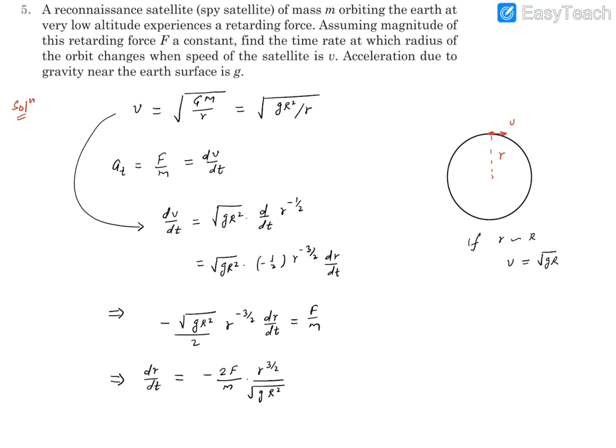We can rewrite it as minus twice F by m, which becomes capital R under root capital R divided by capital R under root g. Capital R cancels out, giving minus 2F by m square root of R by g. Since capital R is not known but V is, we can substitute root R as V by root g. This gives minus 2F upon m times V by root g times root g. Finally, dR by dt equals minus 2FV divided by mg. This answer is in terms of all the given quantities.